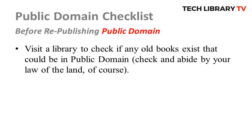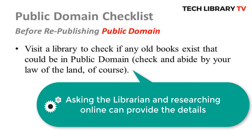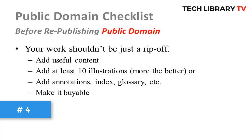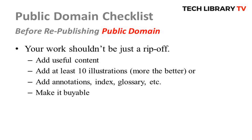Number three: if you are fortunate enough to live near a library, go and look out for any old books that could possibly be in the public domain. You could start from there rather than picking up a book that has already been converted into an electronic format. Chances are that many others would already be working on the same work as you, so the best bet is to pick a book that is yet to be digitalized.